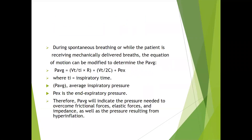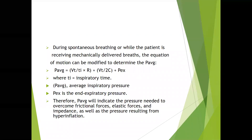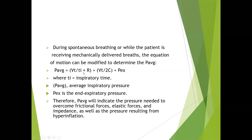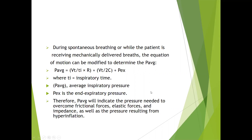During spontaneous breathing or mechanical ventilation, the equation of motion can be modified to determine average pressure: P̄a = (Vt / Ti) × R + (Vt / 2) × (1/C) + PEEP, where Ti is inspiratory time, P̄a is average inspiratory pressure, and Pex is end-expiratory pressure. With advanced ventilators these variables can be calculated at the bedside. The average inspiratory pressure indicates the pressure needed to overcome all frictional forces, elastic forces, impedance, and pressure resulting from hyperinflation.